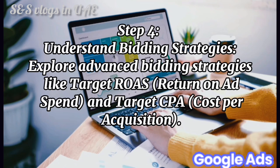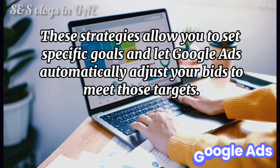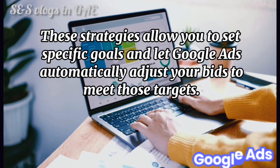Step 4: Understand bidding strategies. Explore advanced bidding strategies like Target ROAS (Return on Ad Spend) and Target CPA (Cost Per Acquisition). These strategies allow you to set specific goals and let Google Ads automatically adjust your bids to meet those targets.